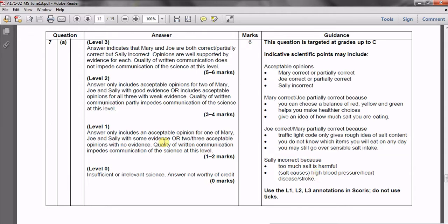So for the different levels of marks then, if you only include an acceptable opinion from one of the three, so if you only comment on either Mary, Joe or Sally and back that up with some evidence, then you'll limit yourself to a level one or two marks. So you might be correcting what you're saying, but you've limited yourself by only looking at one person.